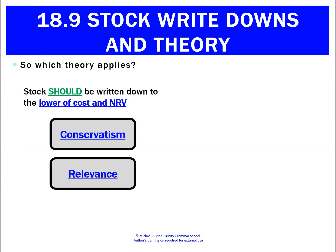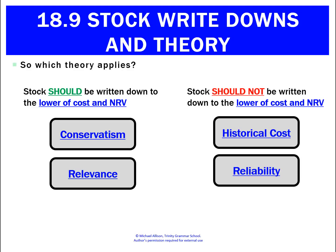What we're left with is: conservatism and relevance say we should write stock down to the lower of cost and net realizable value. But historical cost and reliability say no — always keep them at the original cost. So which theory applies? We're going to ignore historical cost and reliability, and apply conservatism and relevance — always write stock down when the net realizable value is lower than its cost.